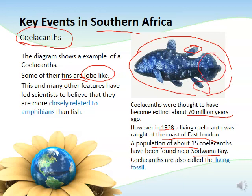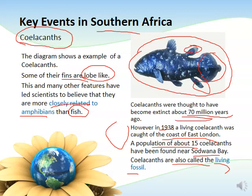Those lobe-like fins and many other characteristic features lead us to believe that coelacanths are more closely related to amphibians like frogs than to fish. All of these features make us call coelacanths 'living fossils' — they are from prehistoric times, have not changed much over millions of years, and are still found today.